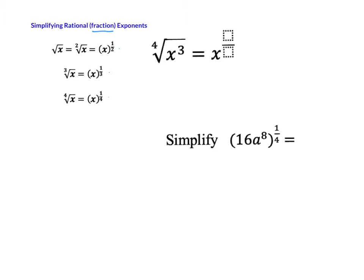Remember, this is called a square root symbol. Right here, square root. This is a cube root, and this is a fourth root. There's an understood 2 here even though you don't see it, and that translates to 1 half, 1 third, and 1 fourth.